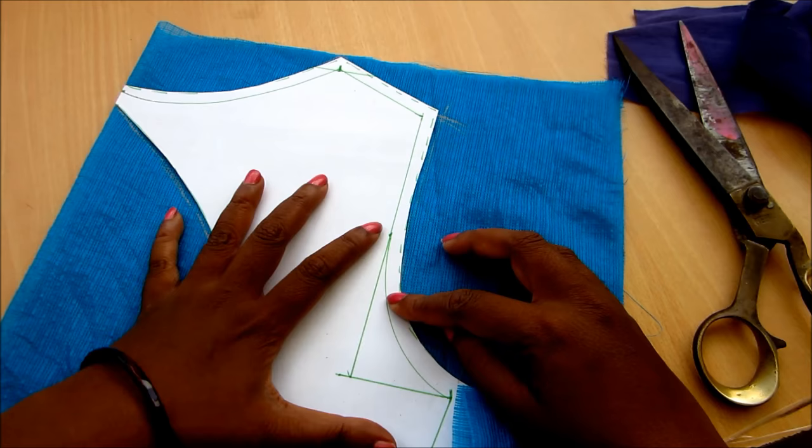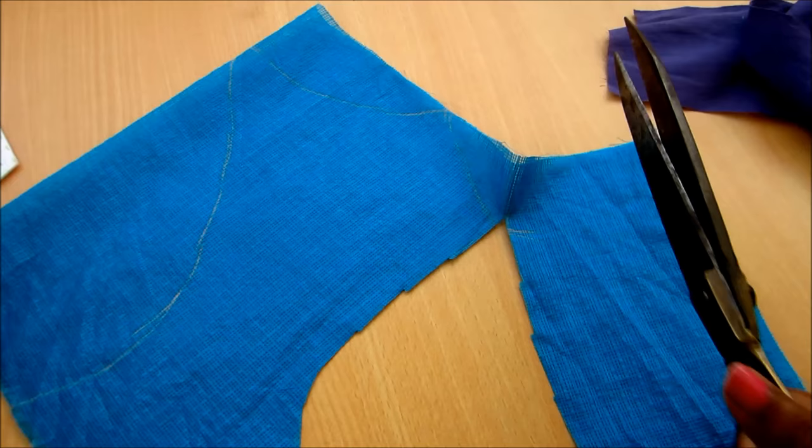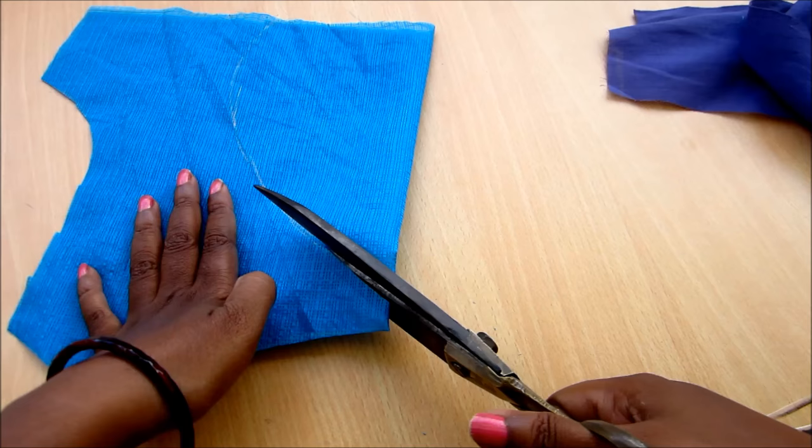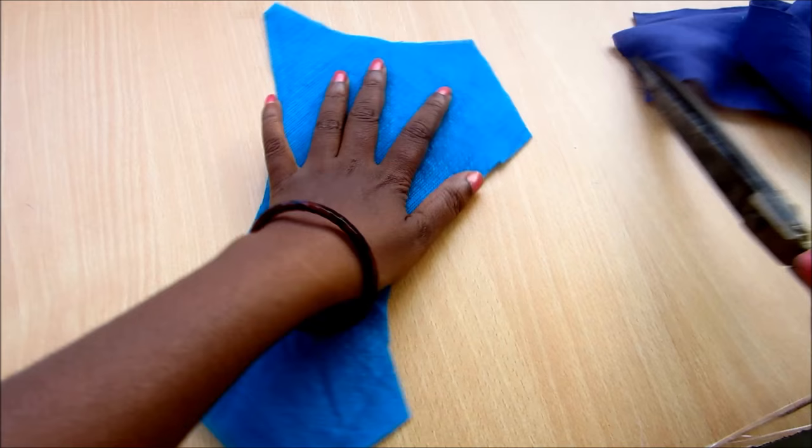This tussar silk is the skinny fabric and I'm not joining any lining to this bodice because nowadays it's trending that for the knit and the skinny fabrics we are not joining the linings.